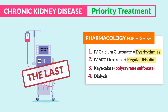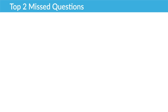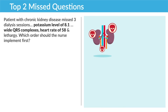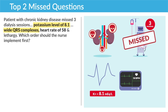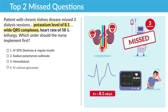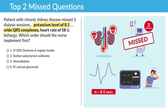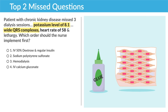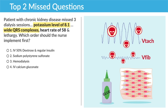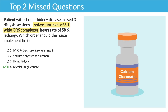Top missed NCLEX question one: a patient with chronic kidney disease missed three dialysis sessions with a potassium of 8.1, wide QRS complexes, heart rate of 58, and lethargy. The key term is high potassium with wide QRS complexes — that indicates dysrhythmias. So give calcium gluconate first to glue down those crazy heart muscles and prevent progression into deadly dysrhythmias.